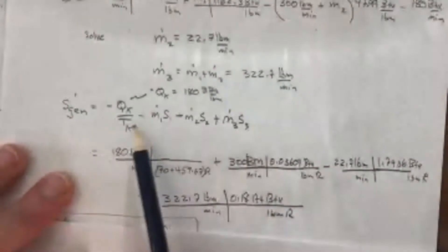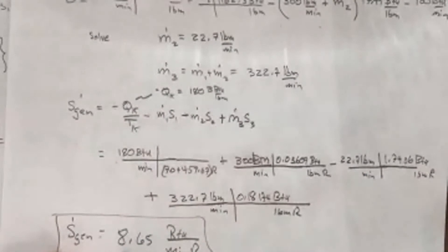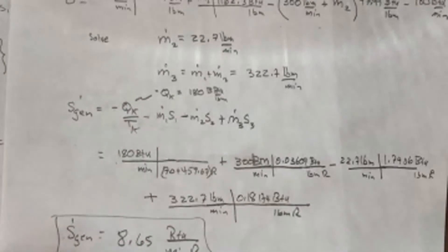Anyway, from here, it's pretty straightforward. Plug and chug. You plug in these numbers, and the final answer I get is 8.65 BTUs per minute ranking.